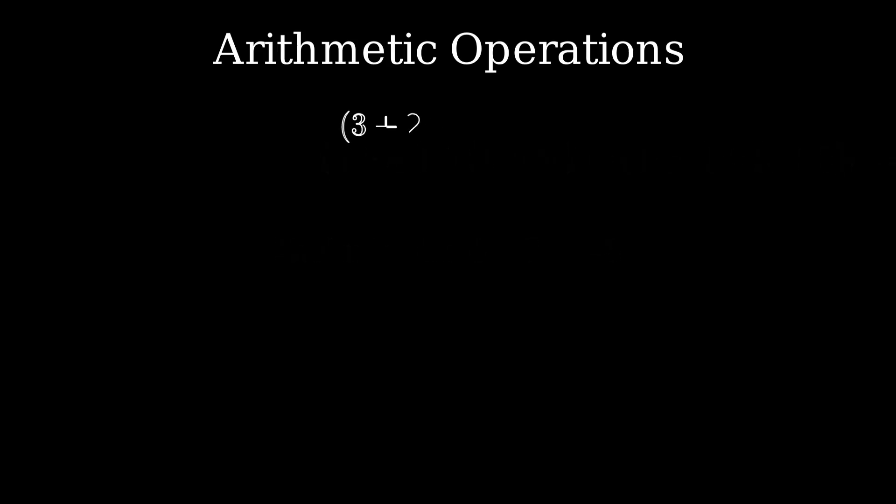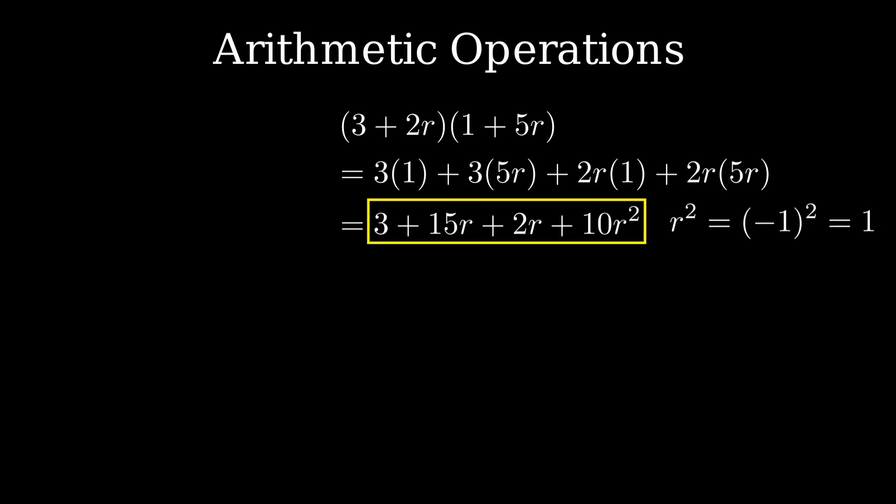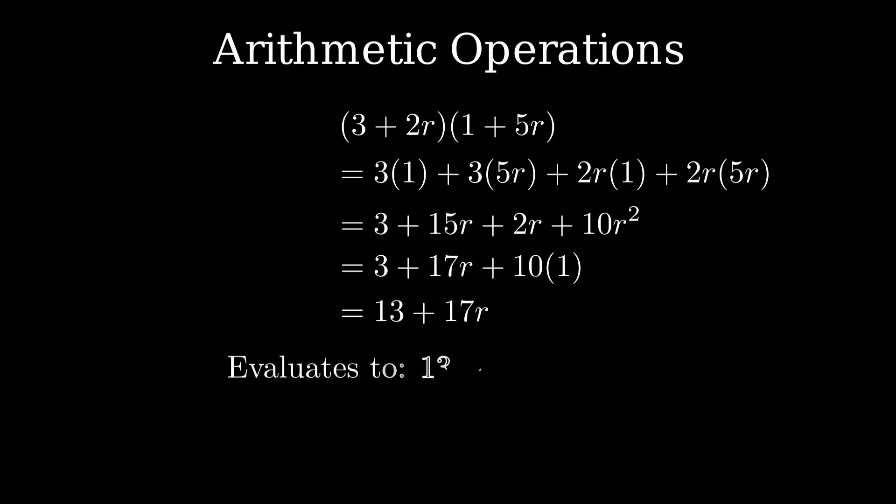Now, multiplication. Multiply 3 plus 2r with 1 plus 5r. We expand the expression, multiply every term, and simplify. We get 3 plus 15r plus 2r plus 10r squared. Since r squared equals 1, we simplify to 3 plus 17r plus 10, which gives 13 plus 17r. Finally, evaluating gives 13 minus 17, which equals negative 4.